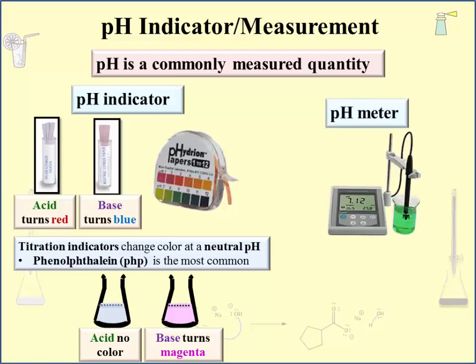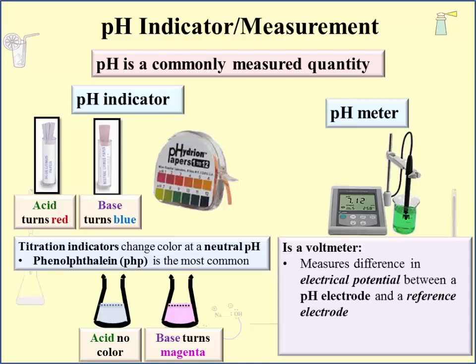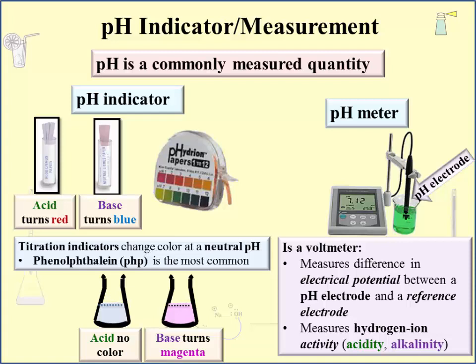The pH meter is a delicate machine that requires calibration but gives very precise and accurate pH values. Essentially it is a voltmeter — it measures the difference in electrical potential between a pH electrode and a reference electrode. The pH electrode is inserted into the solution of interest. Basically, the pH meter measures hydrogen ion activity, determining acidity and alkalinity.